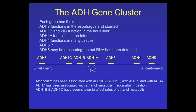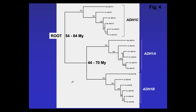ADH7 functions in the esophagus and stomach. ADH1B and 1C function in the liver. ADH1A functions in the fetus. ADH4 functions in many tissues. Not much is known about ADH5 and ADH6 in terms of ethanol metabolism. Those three clusters of the ADH class 1 evolved as duplications before the separation of primates from other animals, and certainly before the old world monkeys — it appears to be primarily a primate-specific duplication that does not exist in the mouse.